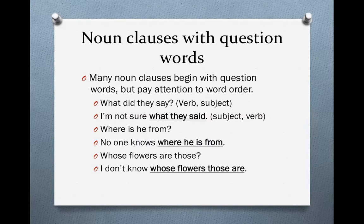Noun clauses often begin with question words, but you need to pay attention to word order. If you have a question like 'What did they say?' in a noun clause it would be something like this: 'I'm not sure what they said.' In questions in English, we put the verb in front of the subject — 'What did they say?' 'Did,' the verb, comes before the subject 'they.' In noun clauses, we use the question word 'what,' but we put the subject before the verb. So instead of 'what did they say,' it becomes 'what they said.'